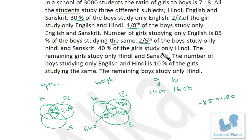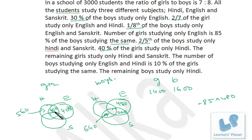40% of the girls study only Hindi. 40% of 1400 is 560, so that's only Hindi for girls — 560. The remaining girls study only Hindi and Sanskrit. We add up these data: 408 plus 400 plus 560 equals 1368. Out of 1400, subtracting 1368 gives 32. So 32 is only Hindi and Sanskrit for girls.